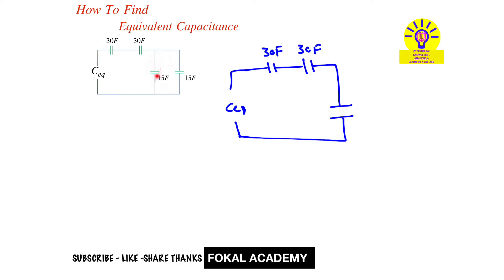Whenever capacitors are in parallel, the overall capacitance equals the sum of all the capacitors. That is 15 farads plus 15 farads equals 30 farads. So that is the equivalent capacitance for these two components, and we replace them with a single capacitor of 30 farads.